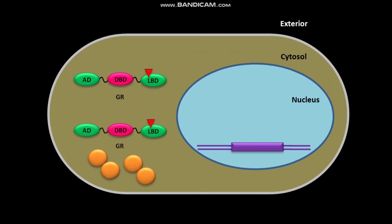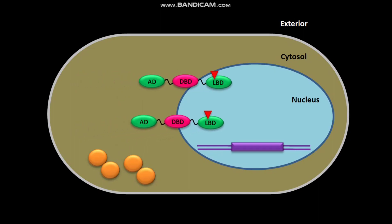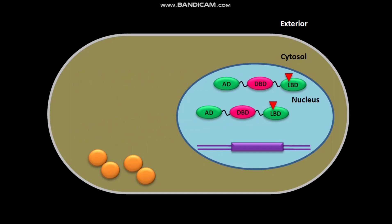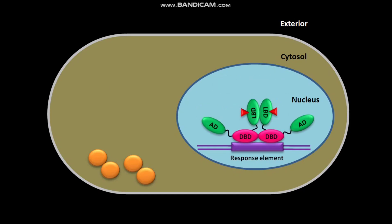Now, two GRs with hormones bound to their LBDs and no inhibitors translocate into the nucleus. In the nucleus, the DNA has a response element. The DNA binding domains (DBDs) of the two hormone-bound GRs then bind to the response element and form a homodimer.